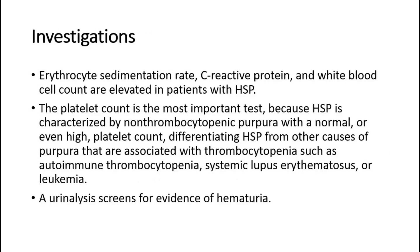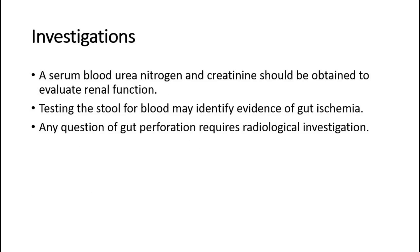For investigations, erythrocyte sedimentation rate, C-reactive protein, and white blood cell count are elevated in patients with HSP. The platelet count is the most important test, because HSP is characterized by non-thrombocytopenic purpura with a normal or even high platelet count, differentiating HSP from other causes of purpura associated with thrombocytopenia, such as autoimmune thrombocytopenia, systemic lupus erythematosus, or leukemia. A urinalysis screens for hematuria, and serum blood urea nitrogen and creatinine should be obtained to evaluate renal function. Testing the stool for blood may identify evidence of gut ischemia, and any question of gut perforation requires radiological investigation.